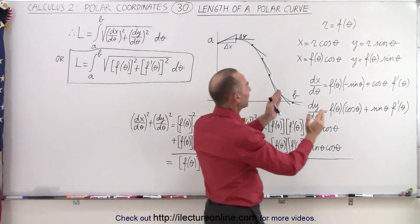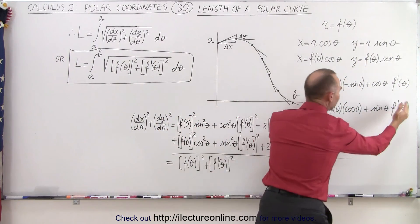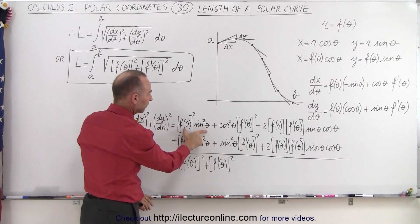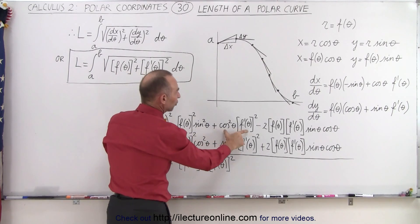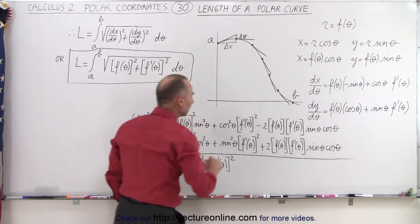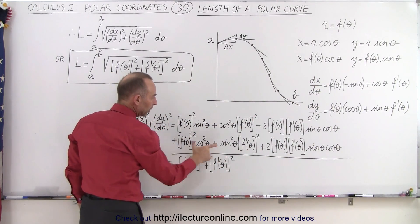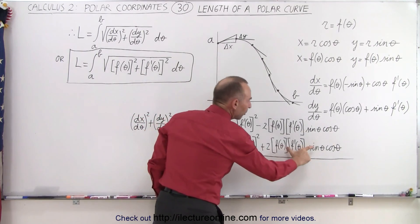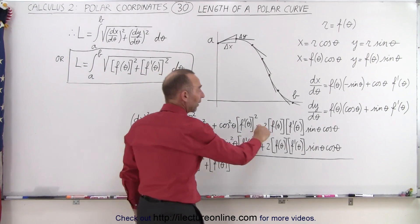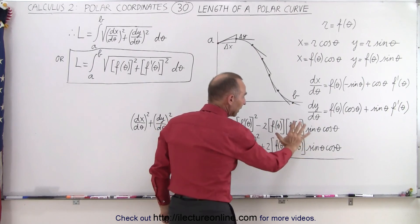We take the quantity dx/dθ and square it, then take dy/dθ squared. Notice this gives us: a first term squared, a last term squared, and twice the product of the two terms — for both dx/dθ and dy/dθ. When you add these together, the cross terms are identical except one is negative and one is positive, so they cancel out.